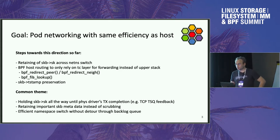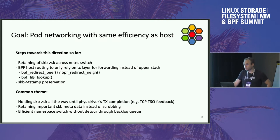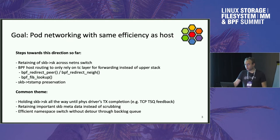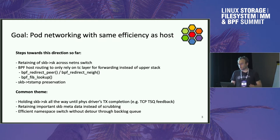So what is the overall goal? The overall goal is that I would like Cilium — and with that BPF as well — to basically have Kubernetes pod networking with the same efficiency as if an application would run in the host. To provide some context from the past, there have already been steps conducted in this direction. One example is to retain the SKB socket association across the network namespace switch. The other thing we have in Cilium is to do all the forwarding inside the host namespace out of the TC layer, so it doesn't even go into the upper stack, thanks to a couple of helpers.